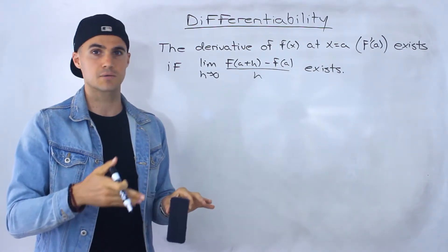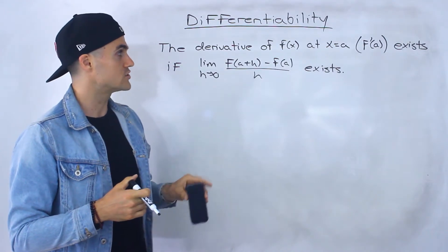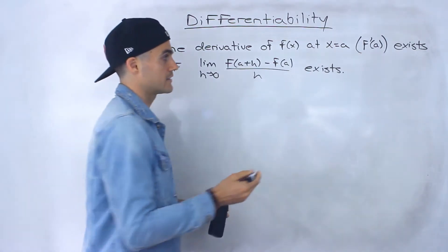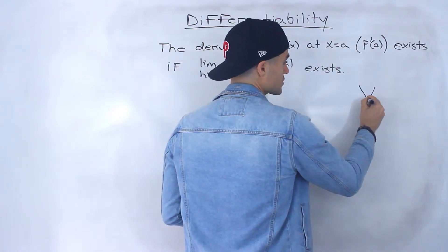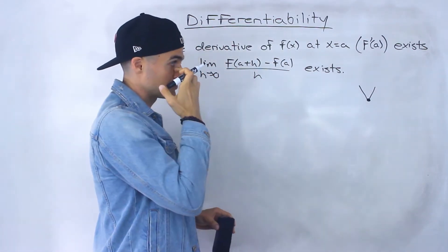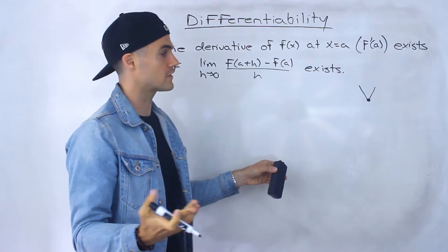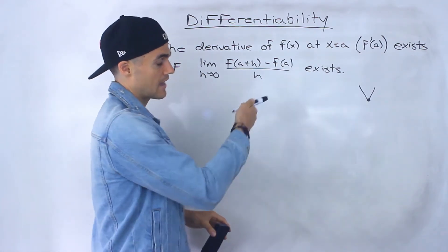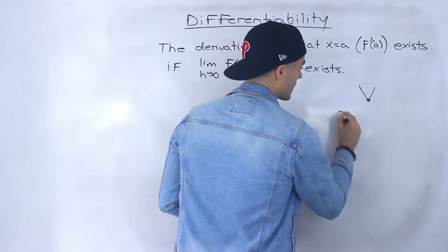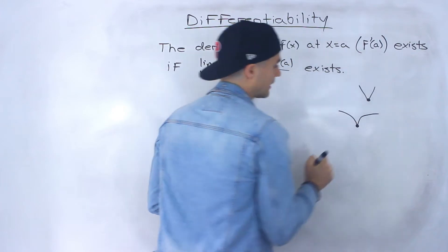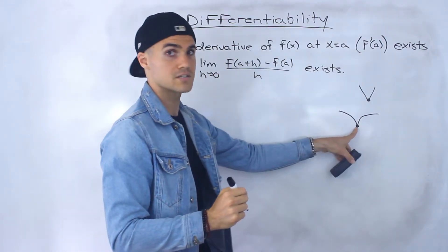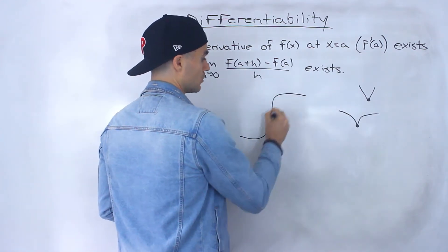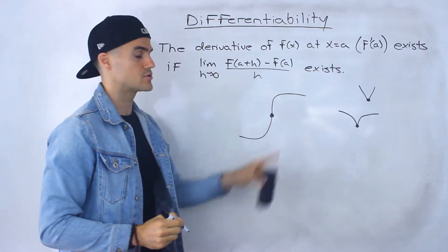We're going to be running into a lot of cases over the next couple of videos where the derivative for certain functions isn't going to exist at certain x values. Just to give you a heads up, some cases we'll be covering include corners — a good example of that is the absolute value function — and we're going to show you why with this definition of a derivative the derivative doesn't exist at that corner. We'll also be dealing with cusps, which is kind of like a corner except it's more of a curve going to that corner instead of straight lines. Another case is vertical tangents, where the derivative won't exist.